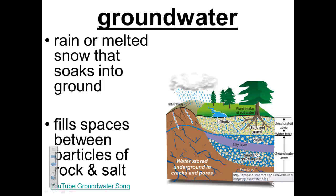Rain or melted snow that soaks into the ground is called groundwater. This water fills spaces between particles of soil and rock. Groundwater keeps sinking until it reaches a layer of rock or clay that it cannot move through. Some layers of rock or clay act like a dam to keep the water from moving deeper, and the water can slowly flow over the top of these layers.